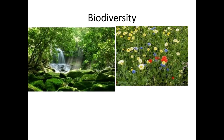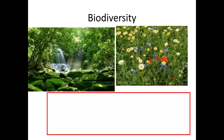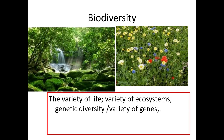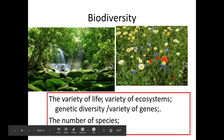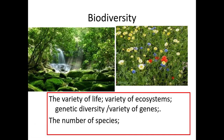So the definition of biodiversity can include: the variety of life; variety of ecosystems; genetic diversity or variety of genes; the number of species. Wherever you see a semicolon, that is another marking point. There are up to four marking points for the definition of biodiversity, although a definition is normally only worth two marks.